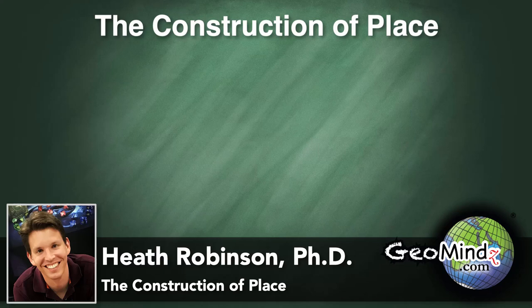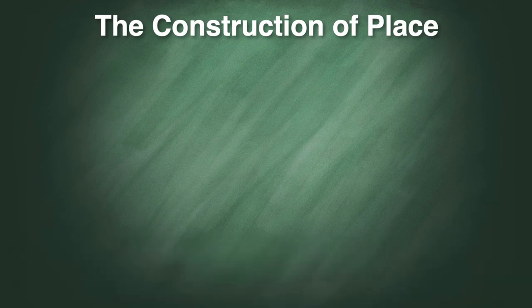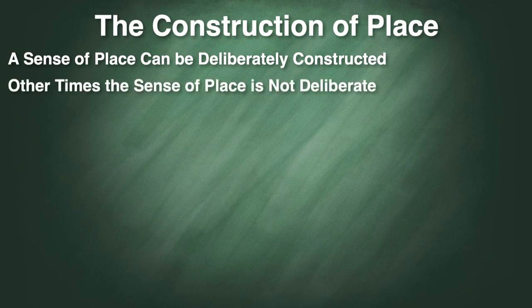In the last lesson, we were talking about the difference between location, space, and place. We're going to be continuing that discussion now with the realization that our sense of place can be constructed, and therefore it has the potential to be inaccurate. Sometimes people or groups of people go to great lengths to deliberately construct a sense of place, and at other times this is done as a side effect of other activities.